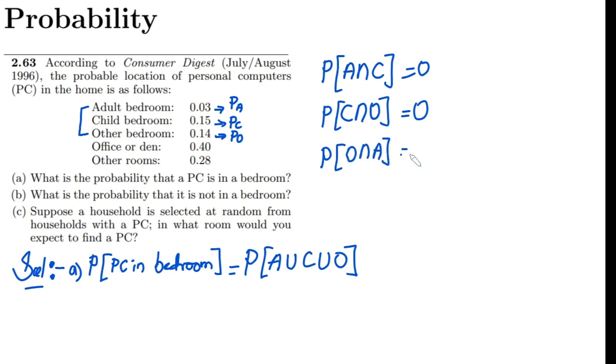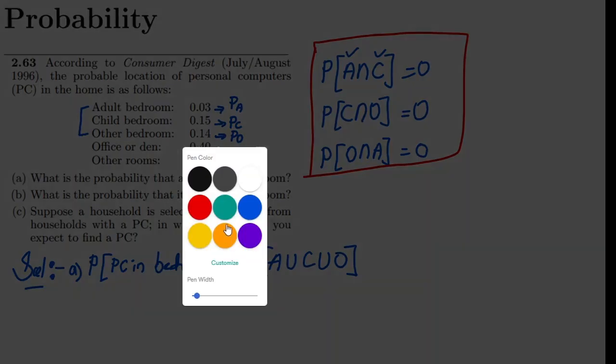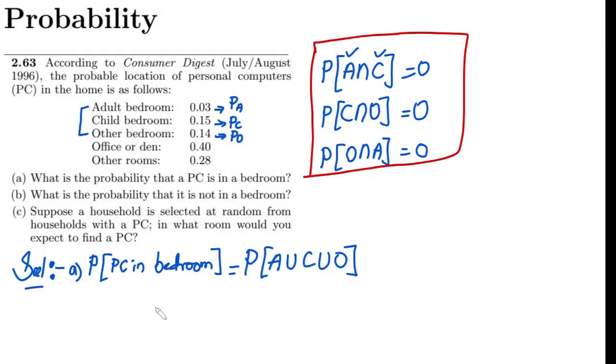Why is it? Because a single PC cannot be simultaneously at the two locations. It will either be in one location or in the other location, but it cannot be available in both locations simultaneously. That's why I am taking all these values equal to 0. So let me use them as well.